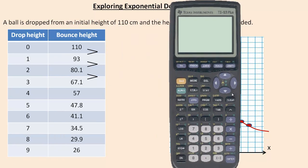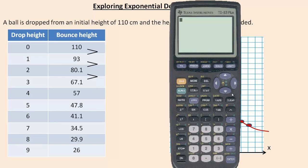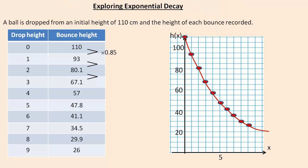So exponential functions have not an adding or subtracting relationship between their function values. They have a multiplication relationship between the function values. So I want to know what I'm multiplying 110 by to get 93, and then what do I multiply 93 by to get 80.1, etc. If I take 93 and divide it by the 110 above it, it's about 0.85. So if I multiply 110 by 0.85, I'm going to get something pretty close to 93. This is data that was collected, so it's not going to be exact. So that multiplication relationship is actually multiplying by about 0.85.